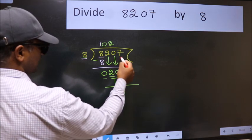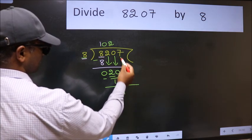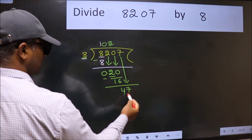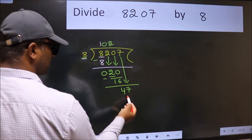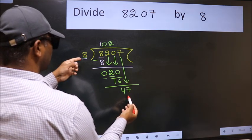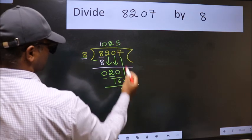After this, bring down the beside number. 7 down. So, 47. A number close to 47 in 8 table is 8, 5, 40.